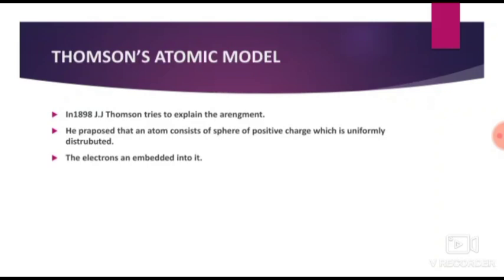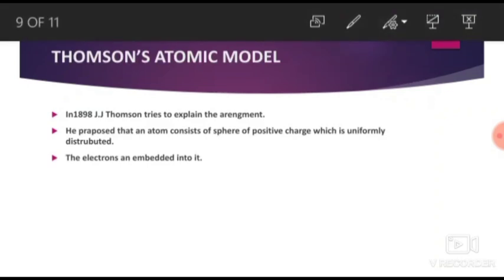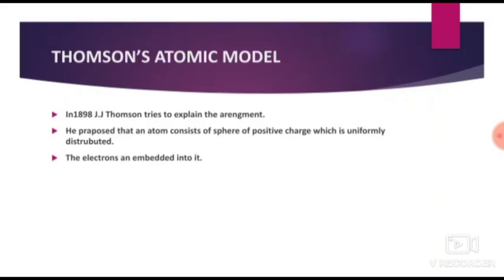So electron, proton, and neutron have all been discovered. These three subatomic particles are called the building blocks of an atom. The next question is: how are these particles arranged inside the atom? In what manner are they arranged? This is what different scientists proposed models to explain.